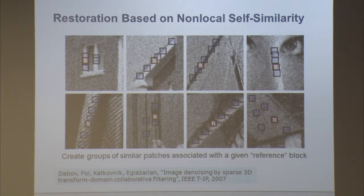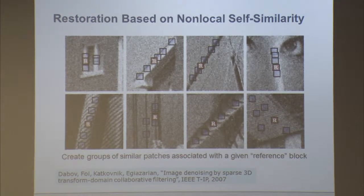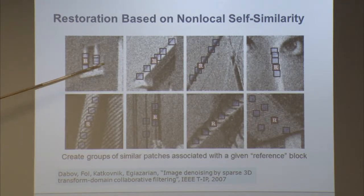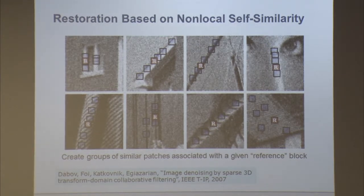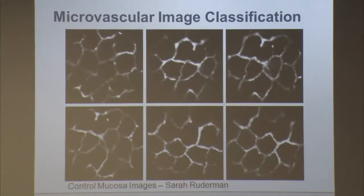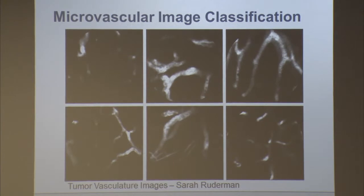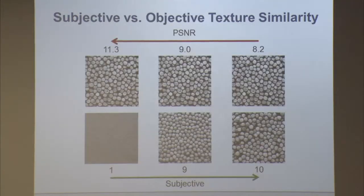Two other applications I've been interested in: image restoration, where there's been a lot of work exploiting self-similarity using non-local techniques — which are state of the art — but these break down for stochastic textures. I've been working with Alessandro Foy and his students to use texture similarity to extend these techniques. Another problem is classification for visual colonoscopy: healthy vessels versus cancerous vessels. If we think of them as texture and analyze the statistics, we can classify them very effectively.